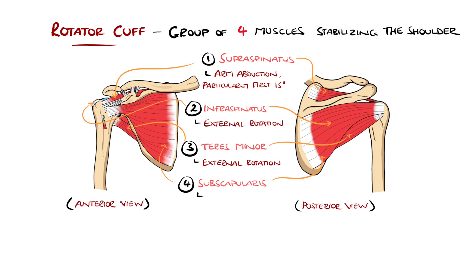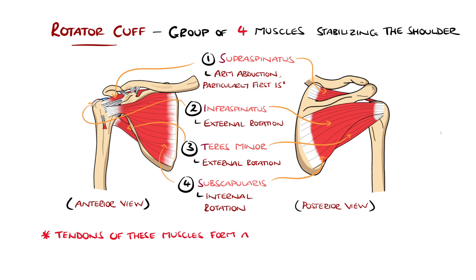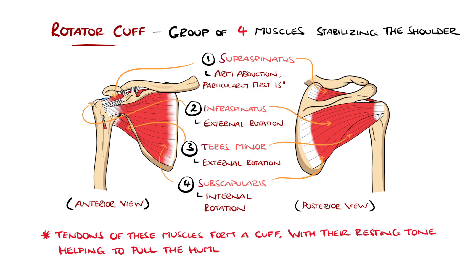And the second S is subscapularis, involved in internal rotation of the arm. These tendons blend to form a cuff around the head of the humerus, with their resting tone collectively helping to pull the humeral head into the glenoid cavity, increasing shoulder stability.